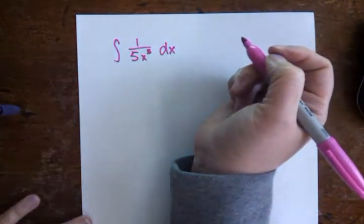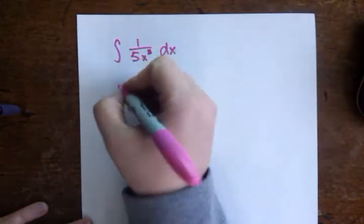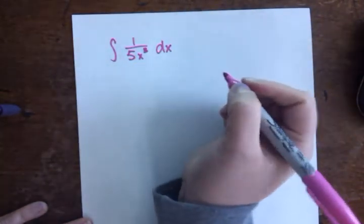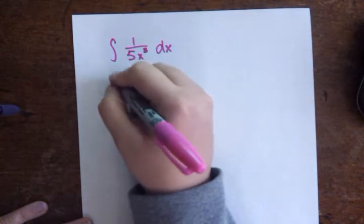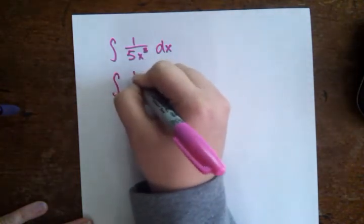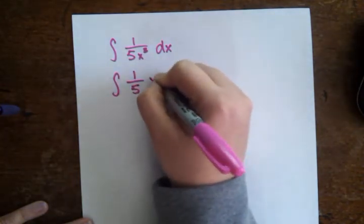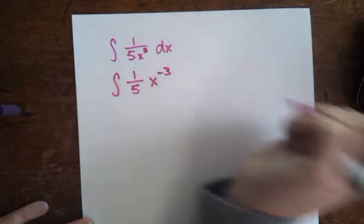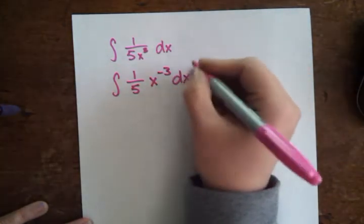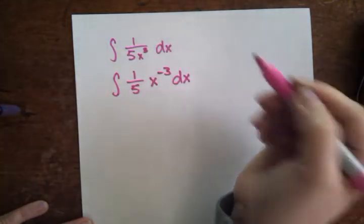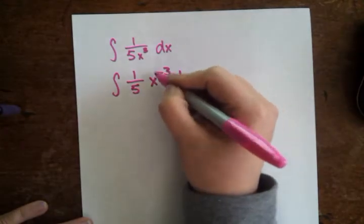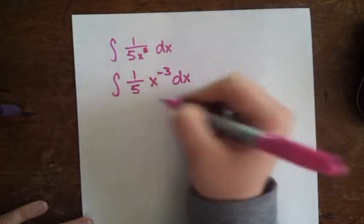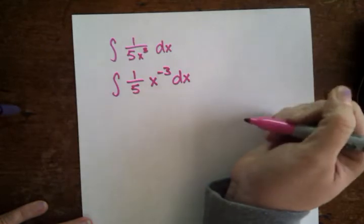I think probably the easiest way to handle this one is going to be to rewrite it. So let's rewrite this in terms of things that we know how to deal with. I'm going to rewrite this as 1/5 times x to the negative 3rd dx. I'm just bringing that x up out of the denominator because I can handle this exponent if I've got it up out of the denominator.